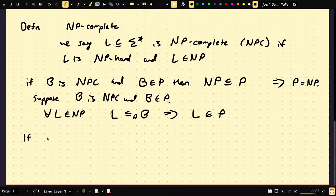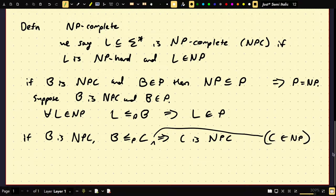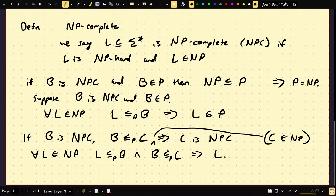Another immediate application: if B is NP-complete and B is polynomial time reducible to some C, then C is NP-complete — C must also be in NP. So given any NP-complete problem, if we can relate it to another problem with a polynomial time reduction, we can show that other problem is NP-complete. We can build up several NP-complete problems this way. The proof uses the fact that composition of polynomial time functions runs in polynomial time: for all L in NP, L ≤_P B and B ≤_P C implies L ≤_P C.